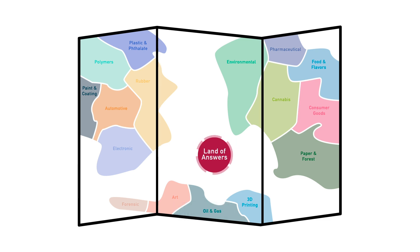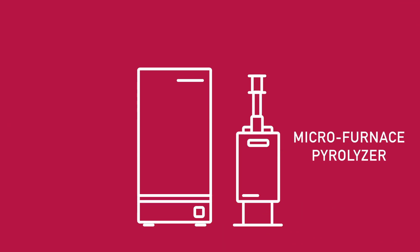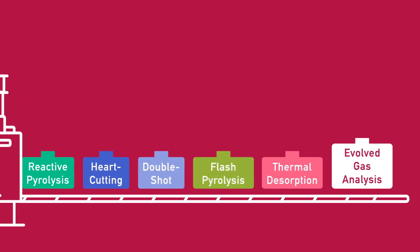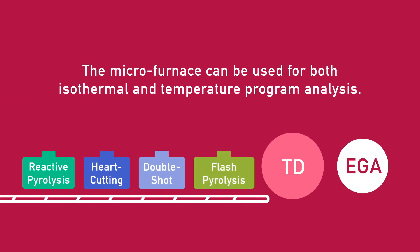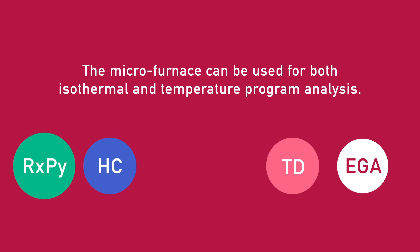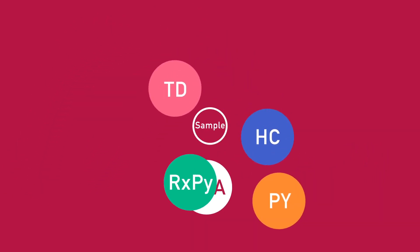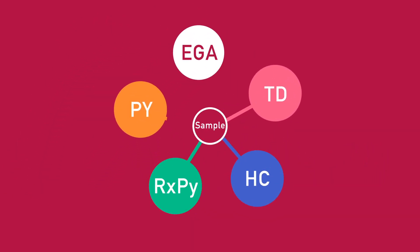The method map is created using Frontier's Multi-Mode Micro-Furnace Pyrolyzer, EGA-Pi 3030D. Unlike the majority of other analytical devices, the Multi-Mode Pyrolyzer allows you to perform multiple analysis on one single sample.